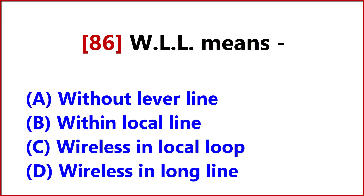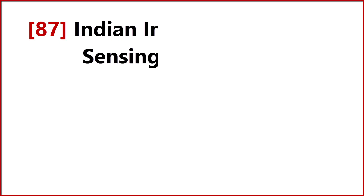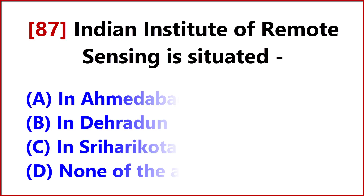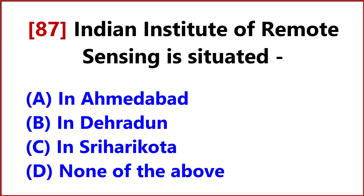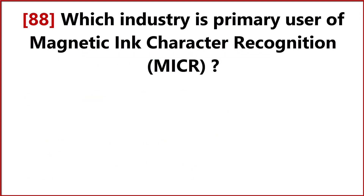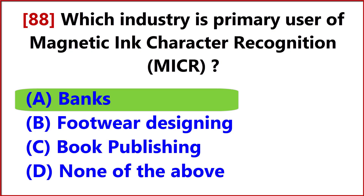WLL means Answer, Option C, wireless in local loop. Indian Institute of Remote Sensing is situated Answer, Option B, in Dehradun. Which industry is the primary user of magnetic ink character recognition MICR? Answer, Option A, banks.